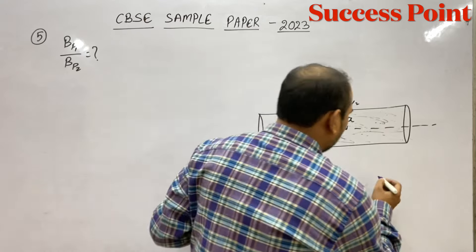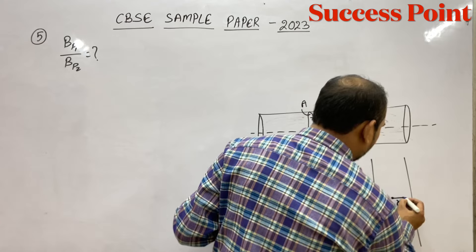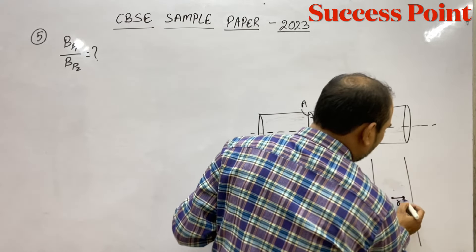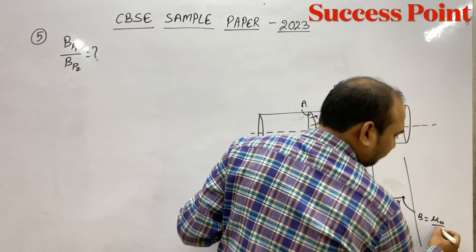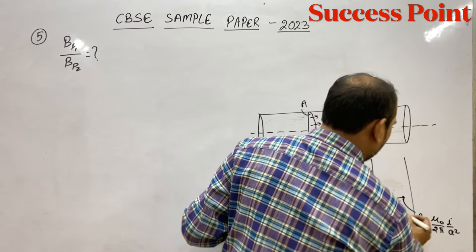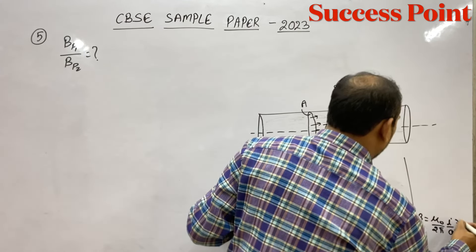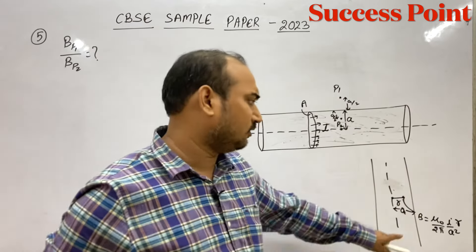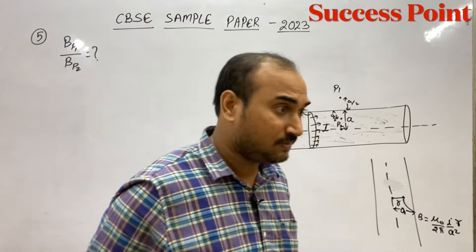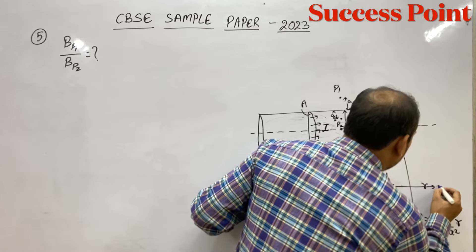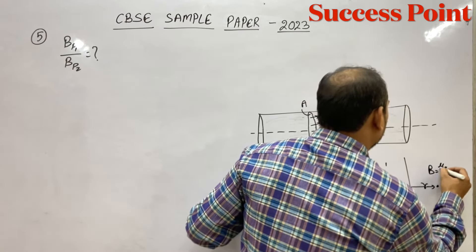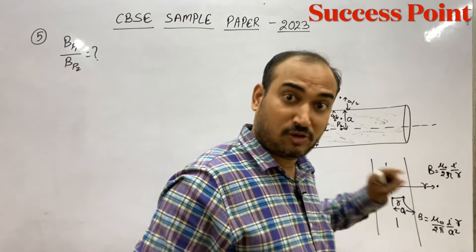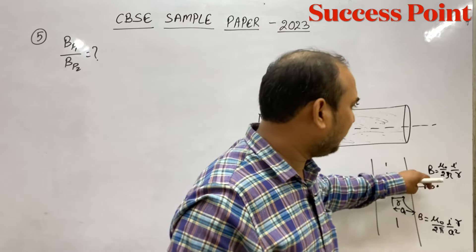अगर कोई thick wire है तो center से r distance पर अंदर वाले point पर magnetic field का formula होता है: B = (μ₀/2π) · (I/A²) · R — जहाँ A radius है। और अगर point बाहर हो, center से R distance पर, तो magnetic field का formula होता है: B = (μ₀/2π) · (I/R)। अंदर magnetic field linearly बढ़ती है और बाहर निकलने पर decrease होती है।